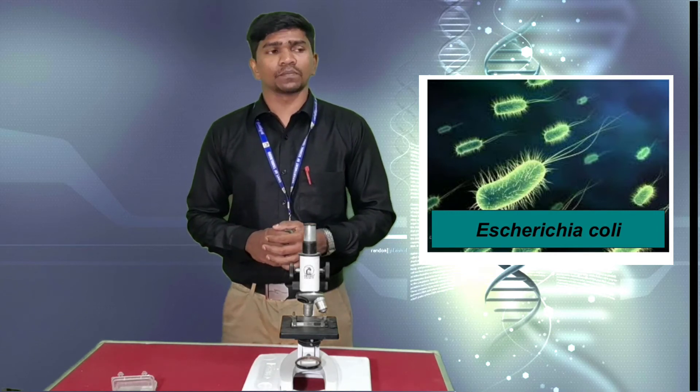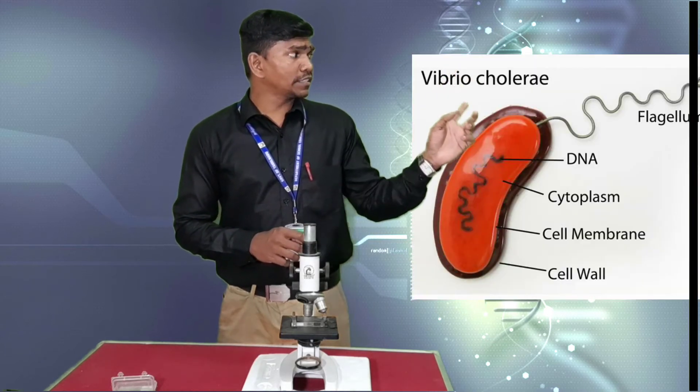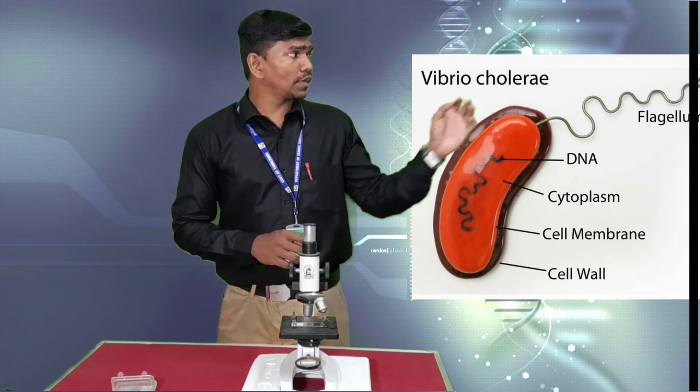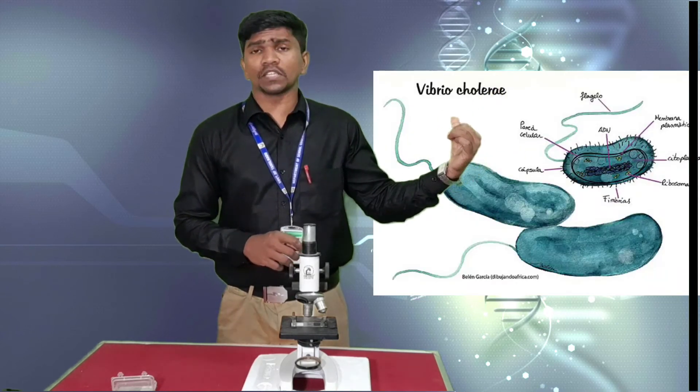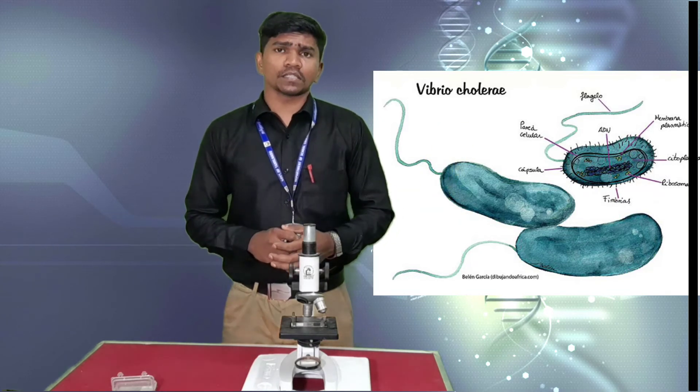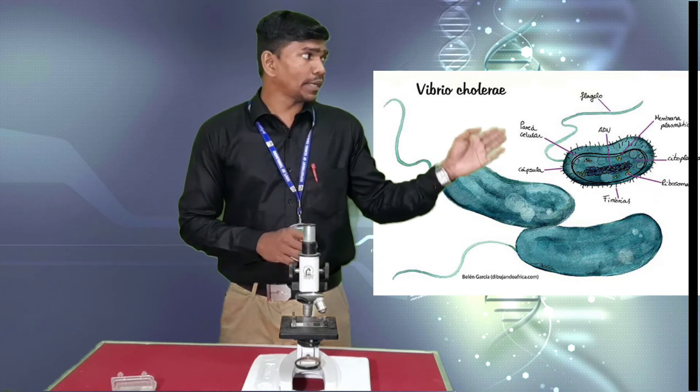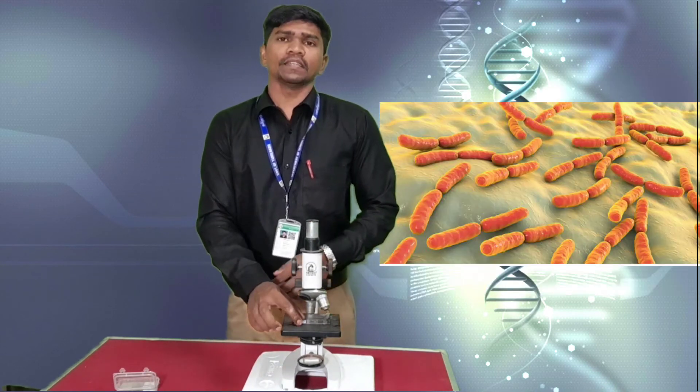The next specimen what we are going to see is Vibrio cholerae. It is a bacteria. Identify as Vibrio cholerae. You draw the structure and label the parts. Then you have identification - it is Vibrio cholerae which is causing cholera. Then it is a bacteria. Like that you have to write for the second part.